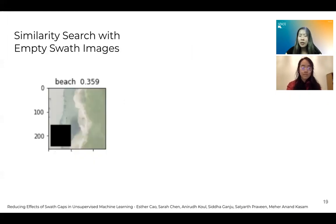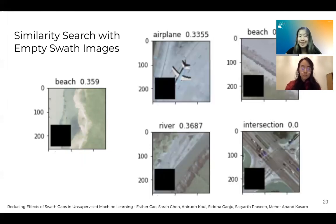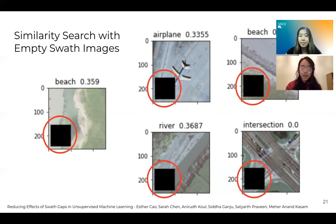However, when we reconducted our search on another beach image, this time with simulated swath gaps in the bottom left corner, our results differed vastly. With the presence of the missing data, the returned most similar images now included airplanes, rivers, and intersections — all definitely not beaches. Through countless reiterations of similarity searches on various query images, we concluded that the computer algorithm was recognizing the location of the swath gaps as the primary feature of these images. The swath gaps are a major problem because too much of the computer vision model's attention is focused on them rather than the more meaningful features of the image — a major flaw when our goal is to correctly identify and categorize satellite imagery.